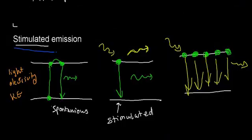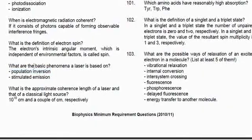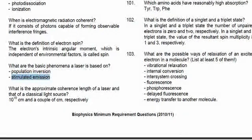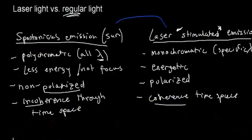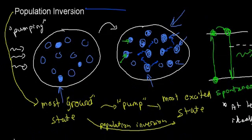That's important to understand when we talk about the mechanism of how laser is generated. This was stimulated emission and population inversion — they're in the minimals. What are the basic phenomena a laser is based on? Population inversion and stimulated emission. The differences and characteristics of laser light may also be listed in the minimals. In the next video, we'll go through the mechanism using stimulated emission and population inversion to effectively give us laser light.